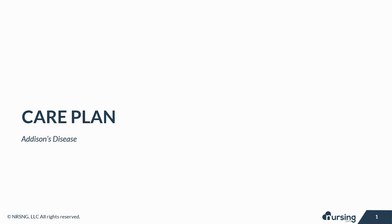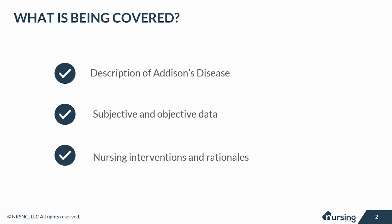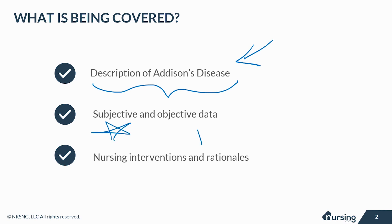Hey guys, today we're going to take a look at the care plan for Addison's disease, also known as primary adrenal insufficiency. In this lesson, we'll briefly take a look at the pathophysiology and etiology of Addison's disease. We'll also take a look at subjective and objective data and nursing interventions and rationales.